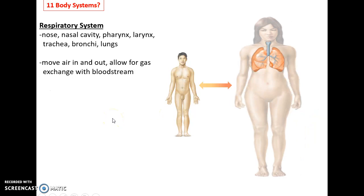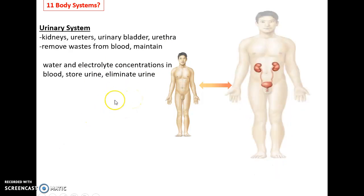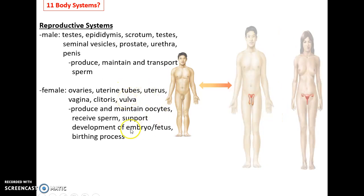The respiratory system — nasal cavity, pharynx, larynx, trachea, bronchi, lungs — moves air in and out and allows for gas exchange with the bloodstream. The urinary system — kidneys, ureters, urinary bladder, urethra — removes waste from the blood, helps maintain the proper composition of the blood, stores urine, and eliminates urine. The reproductive systems: the male reproductive system (testes, scrotum, penis) produces and delivers sperm; the female system (ovaries, uterine tubes, uterus, vagina) produces oocytes, receives sperm, and provides an environment for the embryo and fetus to develop.